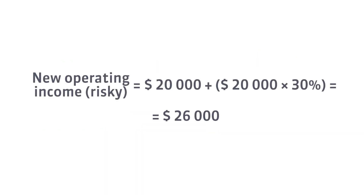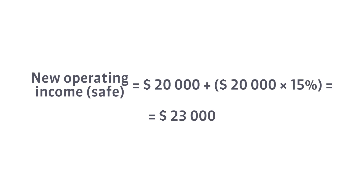In the case of the risky decision, a 10% increase in sales results in a 30% increase in operating income, so the new operating income will be $26,000. In the case of the safe decision, a 10% increase in sales results in only a 15% increase in operating income, so the new operating income will be $23,000.